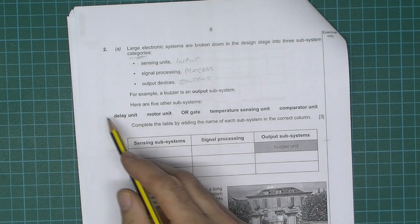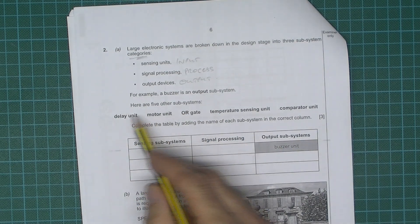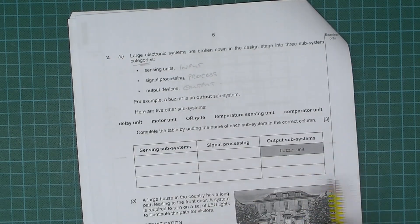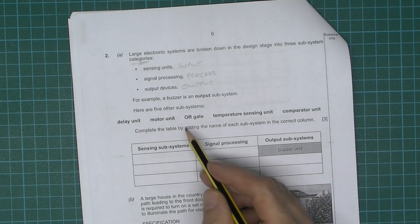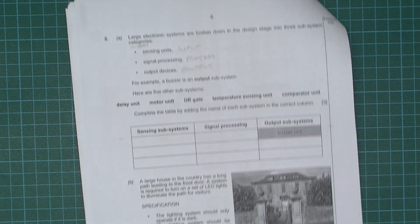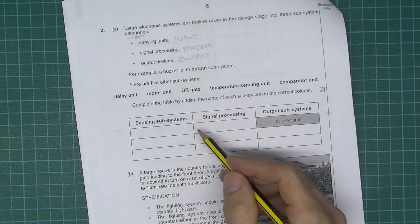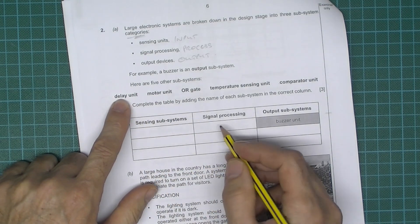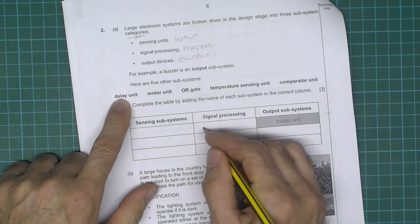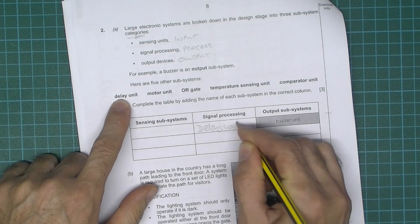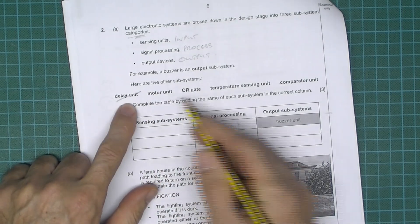Now here are five other subsystems. We have to put these five into the table by putting them in the correct column. Notice it's three marks, so I think this will be marked as one mark for each correct column. I'm assuming so without actually looking at the mark scheme. Okay, so we have to put them in. So a delay unit is a processing unit. So delay unit. Let's cross that one out. You only put it in once.